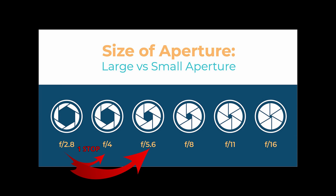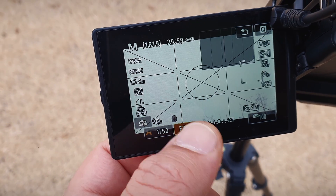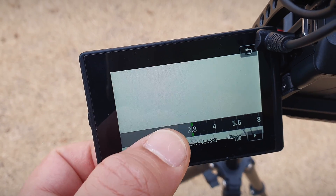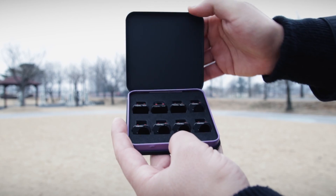Here's the aperture scale: increasing from f/2.8 to f/4 is one stop; f/2.8 to f/5.6 is two stops. For each stop you make, there's a designated ND factor. One stop means ND2, two stops means ND4, three stops means ND8, and so on. So I thought: what if we use a camera first to decide which ND filter gives the right exposure, then put that filter on the DJI Mini 2?